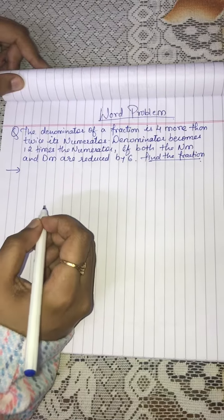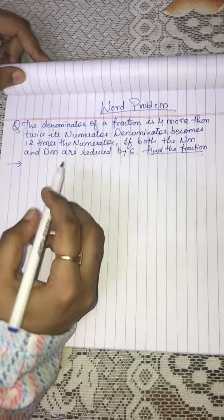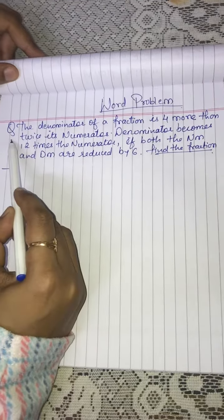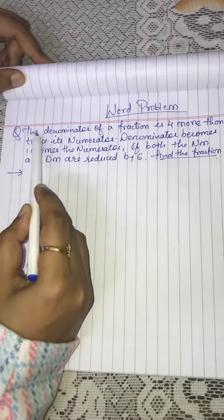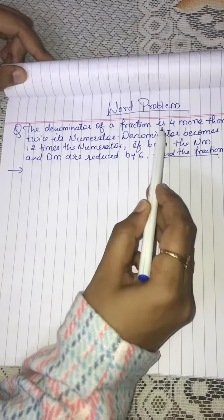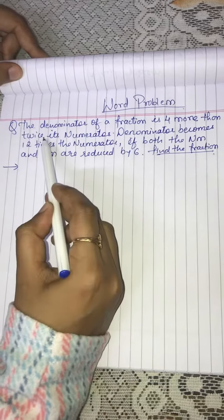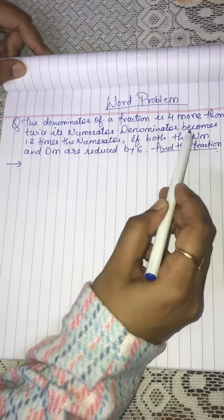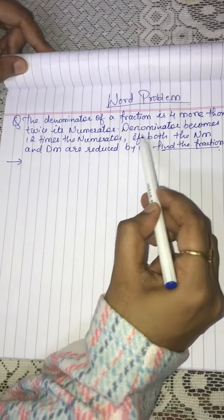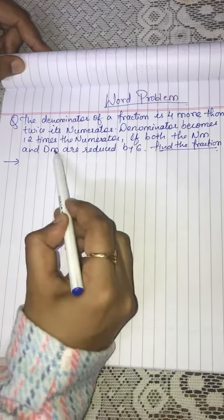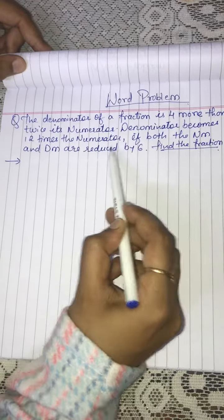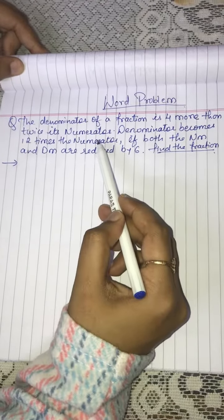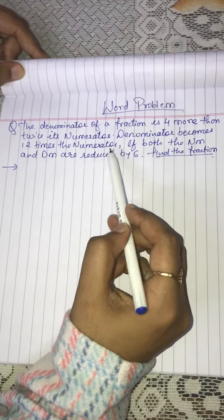Hello guys. In this video I have taken another word problem of linear equations. The question is: the denominator of a fraction is 4 more than twice its numerator. The denominator becomes 12 times the numerator if both the numerator and denominator are reduced by 6. Find the fraction. This type of question is very important as per boards.